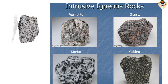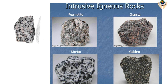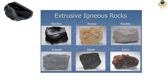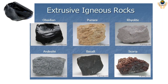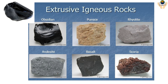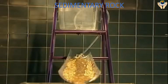Examples of extrusive igneous rocks include obsidian, pumice, rhyolite, andesite, basalt, and scoria.